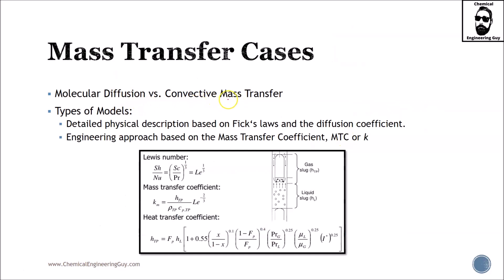Molecular diffusion versus convective mass transfer is the main topic—or actually, convective mass transfer is the main topic, but we've got to move from our previous knowledge on molecular diffusion. We have several types of models for convective mass transfer. As you can imagine, there are theories and ways to approach this. We can either work with a detailed physical description based on Fick's laws and the diffusion coefficient and get so many fancy equations that get very interesting, or because we are engineers, we don't like to get that complex. We will go with the engineering approach, which is based on the mass transfer coefficient. We will see that all the crazy equations, mathematics, and experiments can be simplified by just using a mass transfer coefficient, from now on MTC or k.